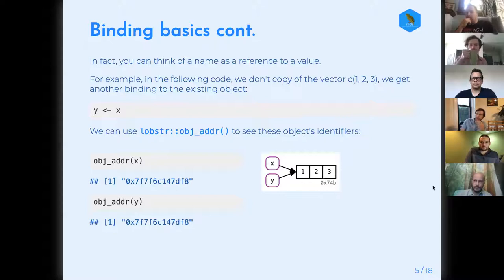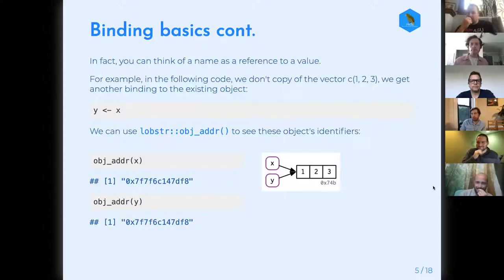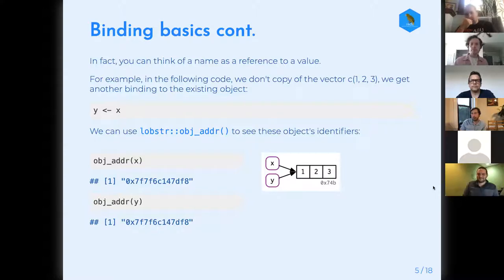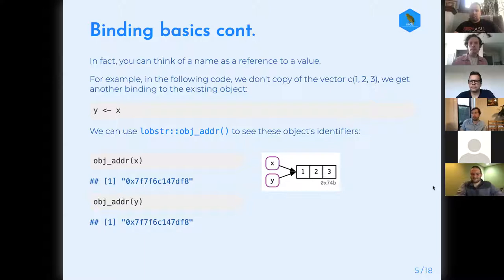We'll use diagrams from the book throughout. Purple boxes are names, arrows are bindings, objects are some kind of structure with a reference — just an artificial address. If we follow this example and duplicate x to y, is R creating a copy? Actually R is smart enough to save memory: it just makes a new name and points it to the same object that x was pointing to. We can check this using the obj_addr function from lobster — both x and y have the same address.